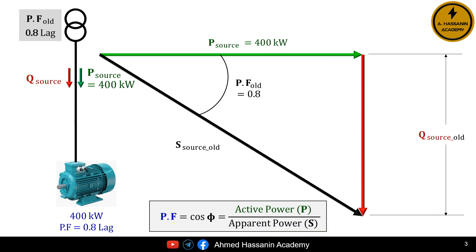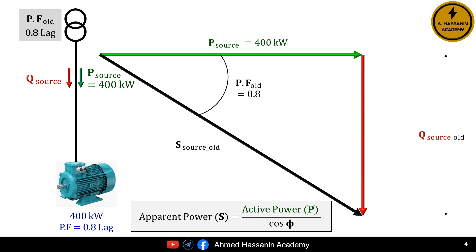By using the power triangle, the power factor is equal to cosine phi, which is also equal to the active power P divided by the total or apparent power S. This means that the total or apparent power S is equal to the active power P divided by the power factor, or cosine phi.